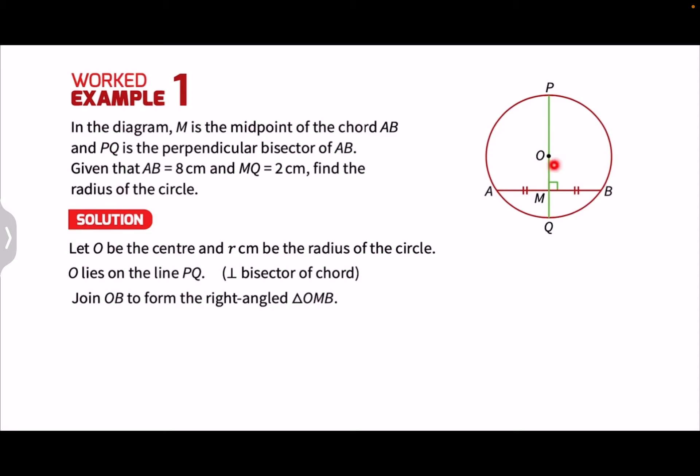So we'll join OB to form the right angle triangle OMB. And since BQ bisects AB, MB here will be half the length of AB, MB will be 4cm. And since MQ here is 2cm, the length of OM will be R the radius minus 2cm. So OM will be R minus 2cm.